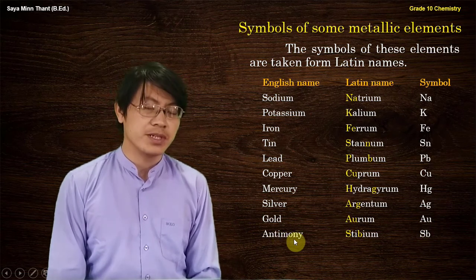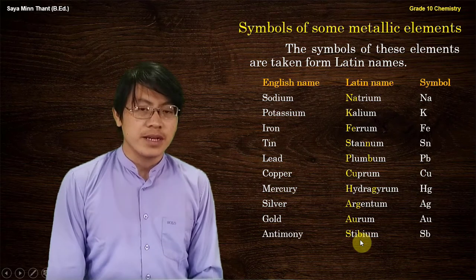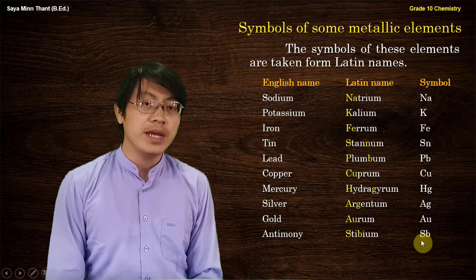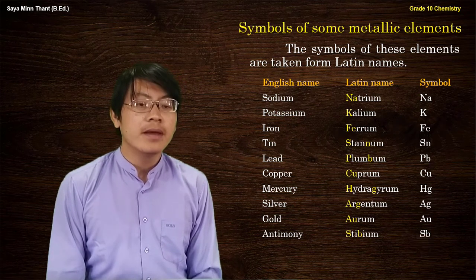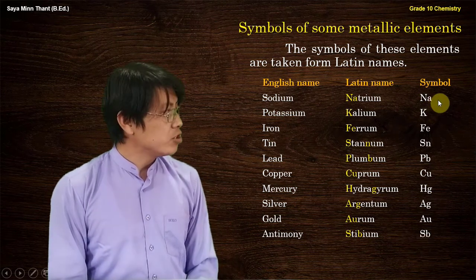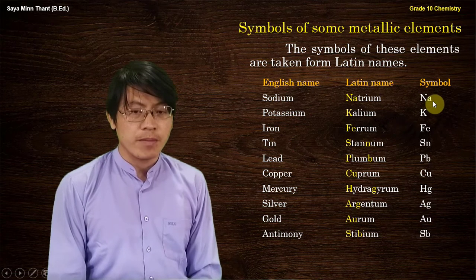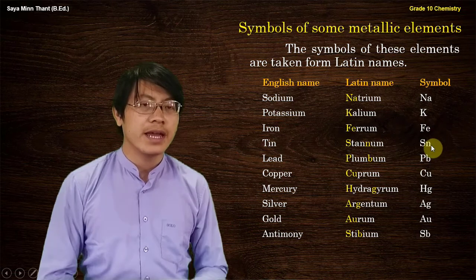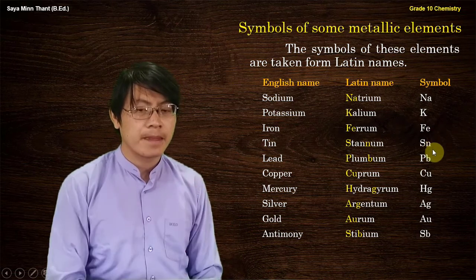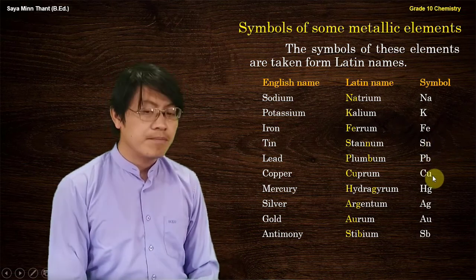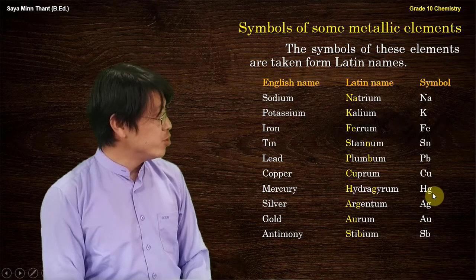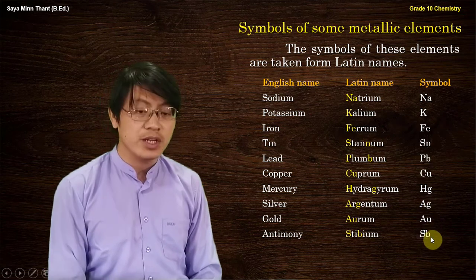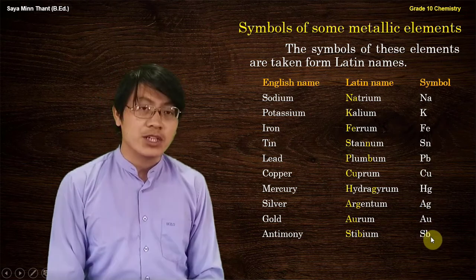Antimony: Sb. English name, symbol name. Sodium: Na. Potassium: K. Iron: Fe. Tin: Sn. Lead: Pb. Copper: Cu. Mercury: Hg. Silver: Ag. Gold: Au. Antimony: Sb. English name, symbol.